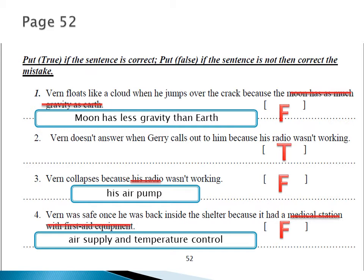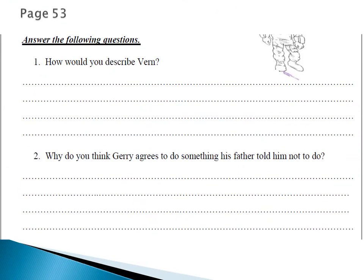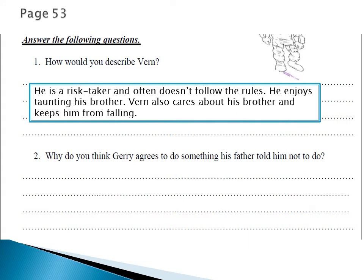The next page is 53. How would you describe Verne? Verne didn't care about what his dad told them — he broke the rules and likes to take risks. At the beginning, it wasn't enough for him to walk on the moon and jump over the first trail; he wanted more adventures and a wider rail to jump over. So we can say Verne is a risk-taker who likes to take risks, often doesn't follow the rules, and enjoys taunting his brother.